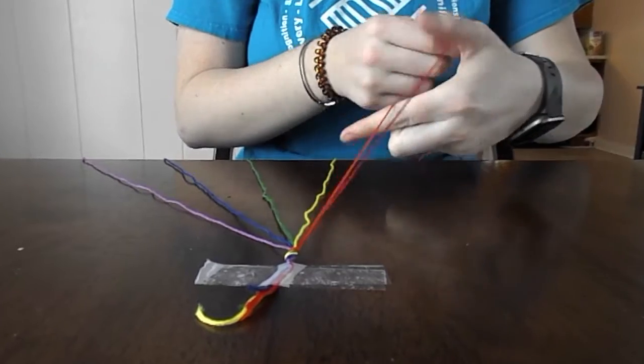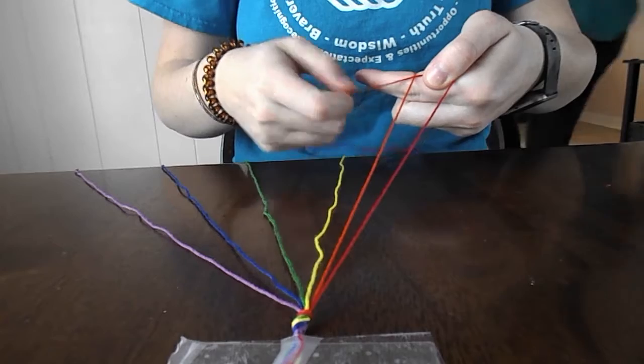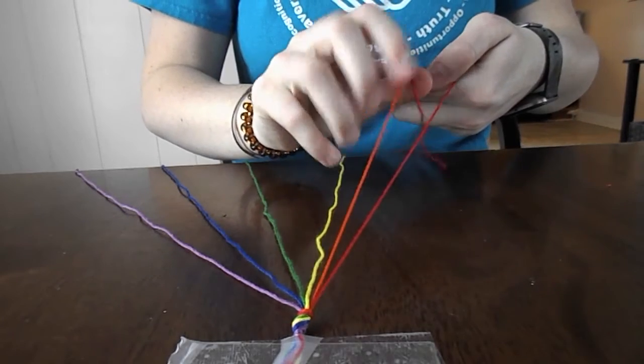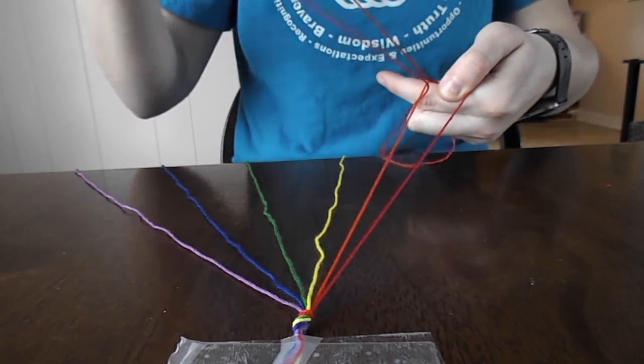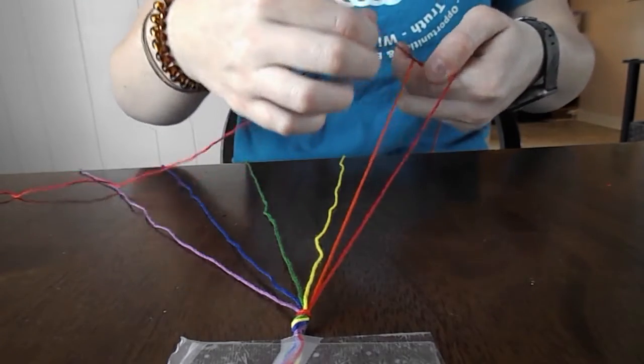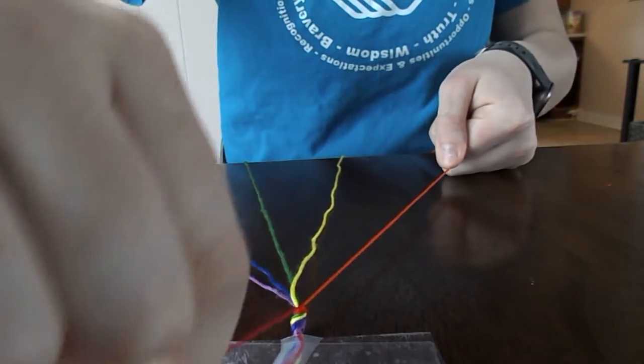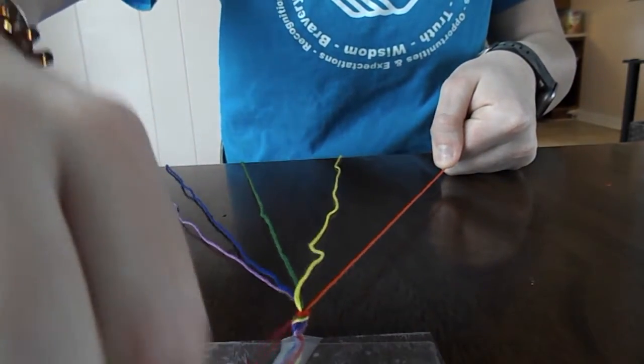Then you are going to take your first two strings and you are going to loop string 1 under string 2. Then once string 1 is under string 2 and looped around, you are going to pull up and as tight as you can into a knot at the top. Pull as tightly as you can.